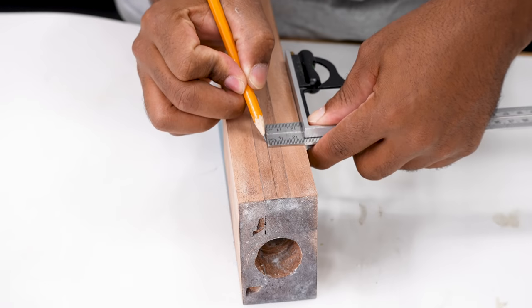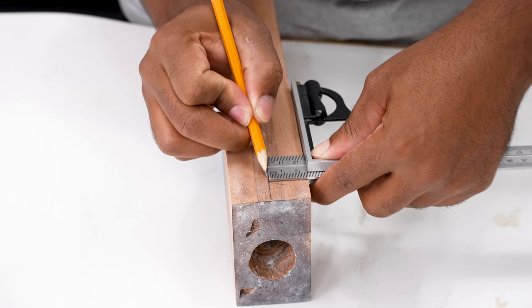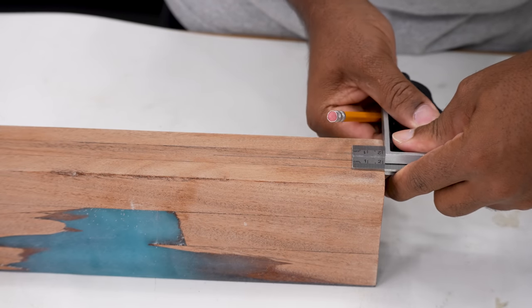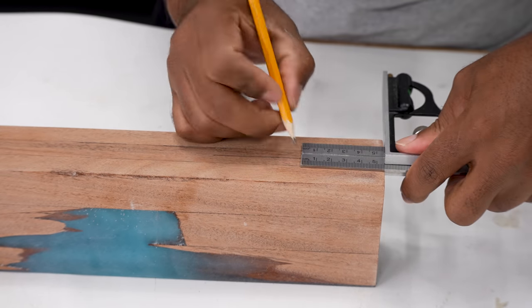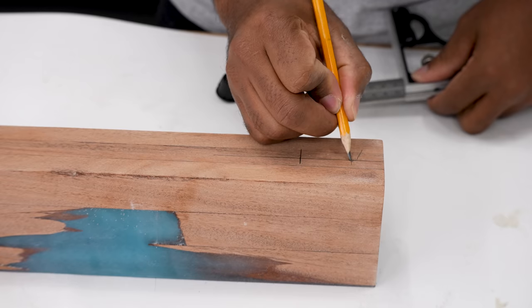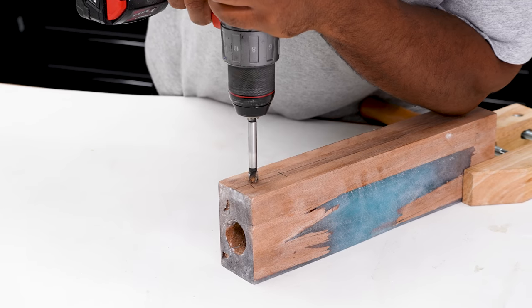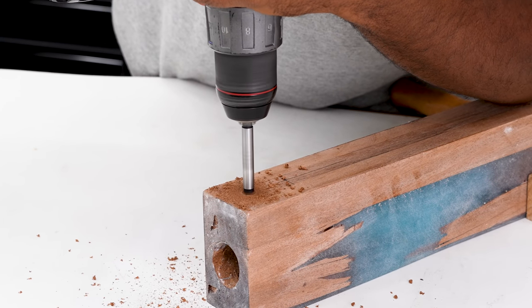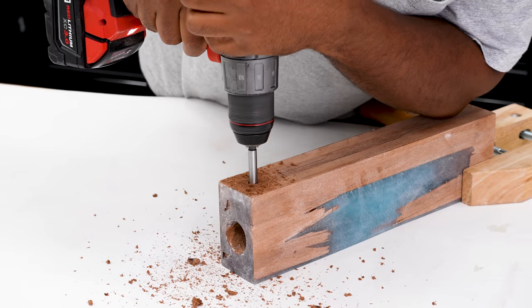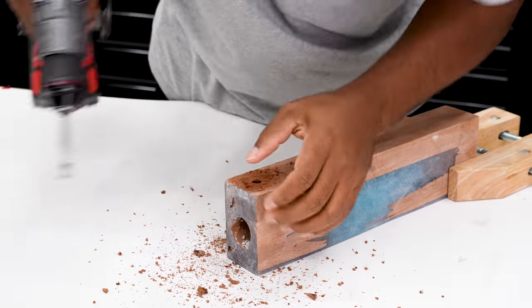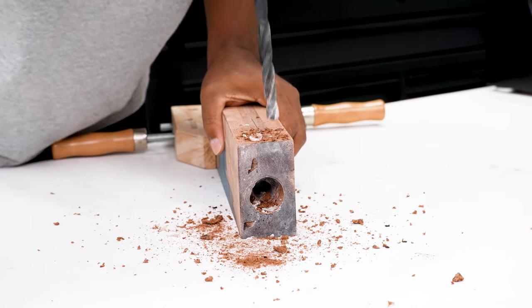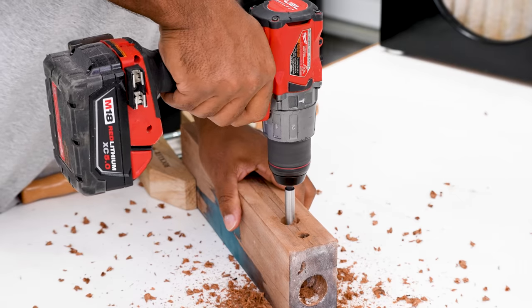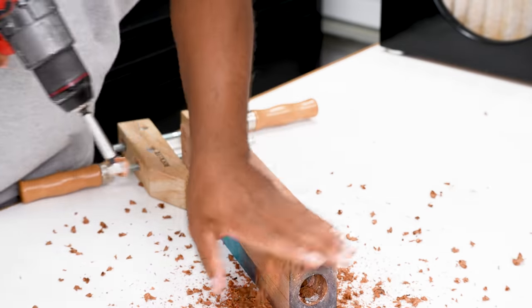Before drilling the holes, I'll mark off where I want the switch and the power port to be. I placed them where I felt they would be most pleasing to the eye. To me, it made more sense to put the power port at the bottom and the switch at the top.